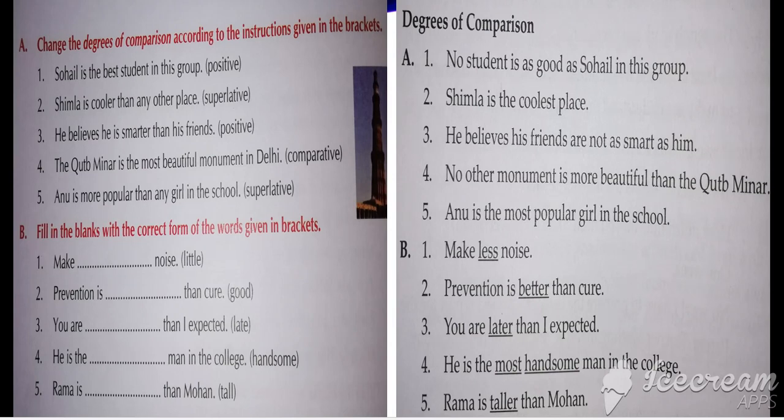Now see the fourth: 'The Kutub Minar is the most beautiful monument in Delhi.' You have to convert this into the comparative degree. 'The most beautiful' shows this is the superlative degree. So you have to convert it into the comparative: 'No other monument is more beautiful than the Kutub Minar.'